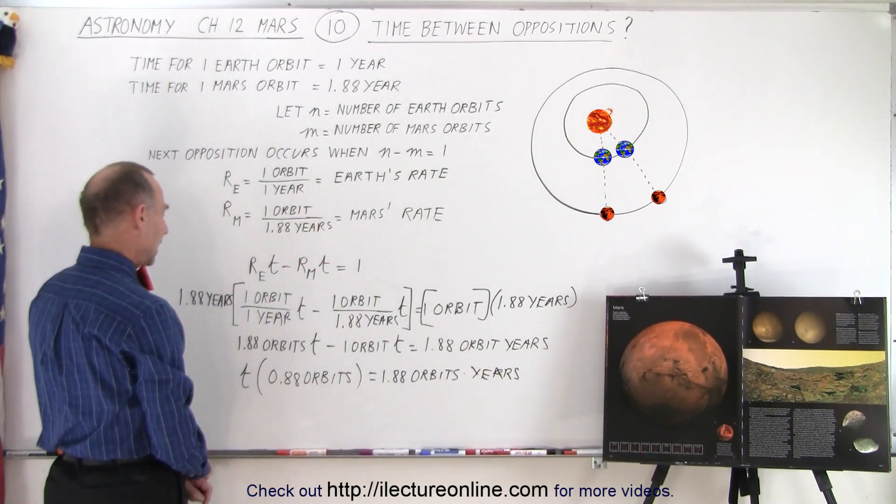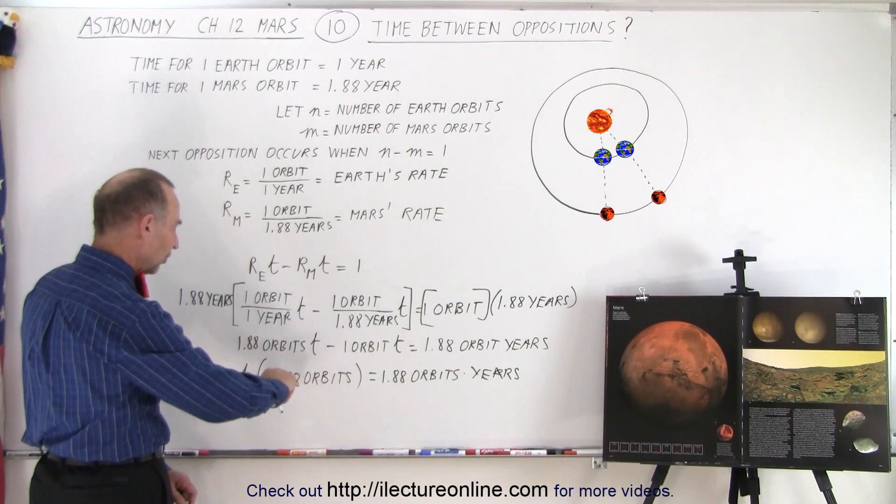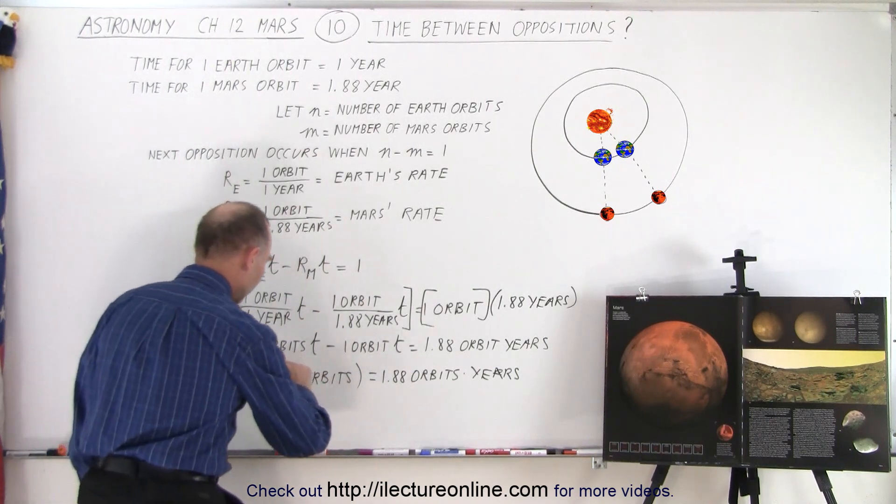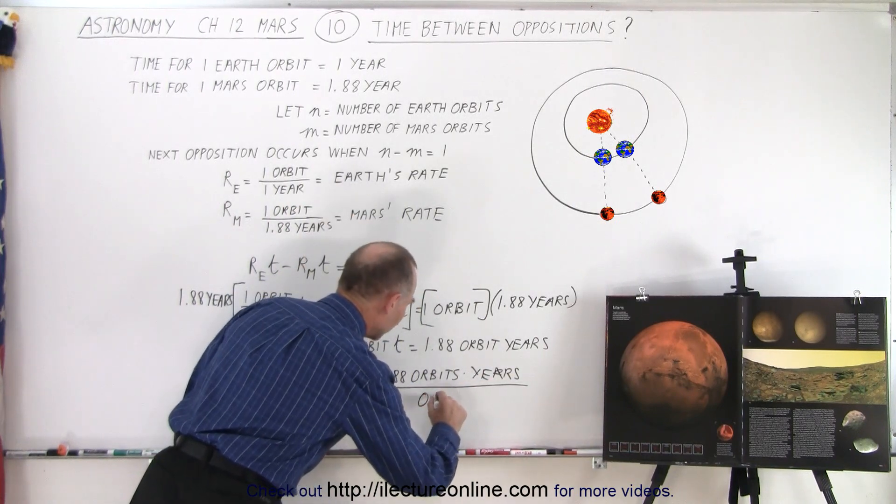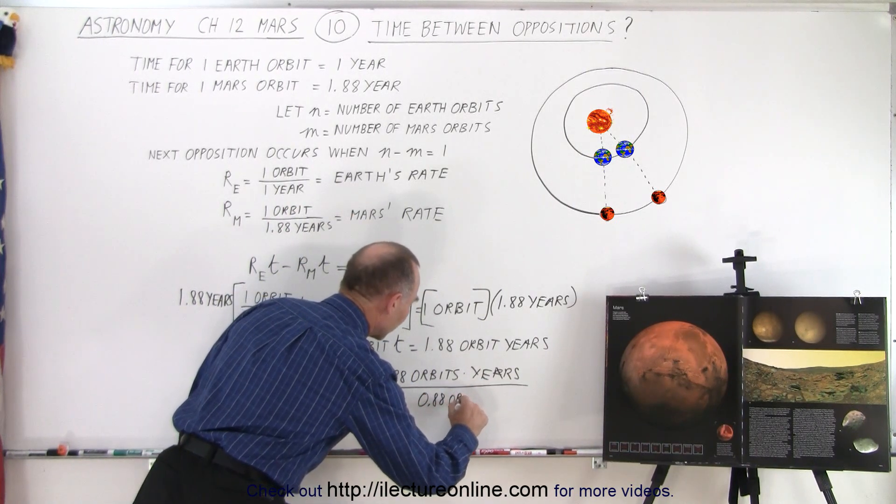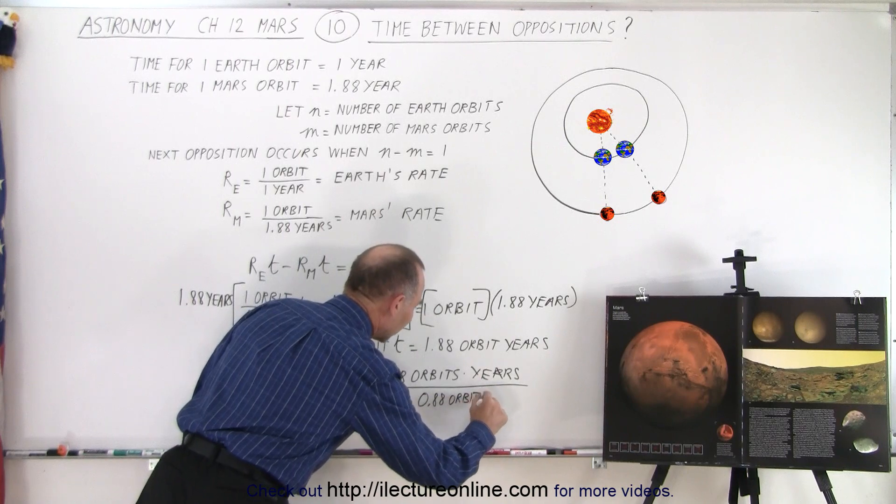And then finally we can divide both sides by 0.88 orbits. So divide this by 0.88 orbits and move it over here, so we get 0.88 orbits. And then notice we have t is equal to 1.88 orbits times years divided by 0.88 orbits. Orbits cancel out.